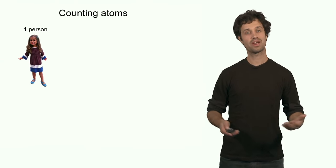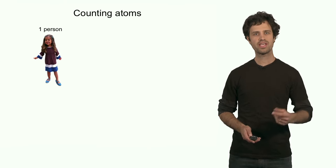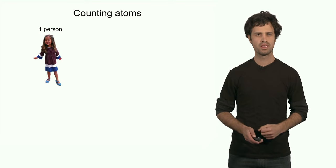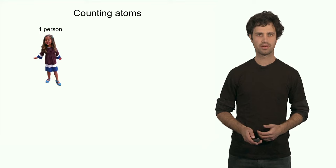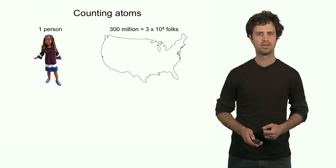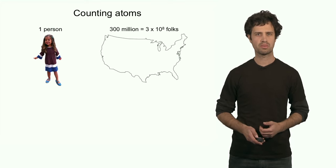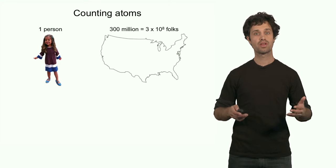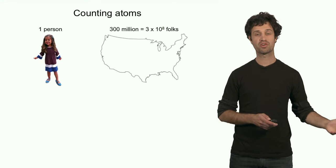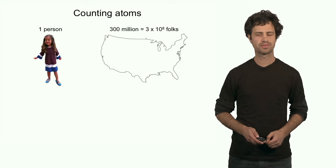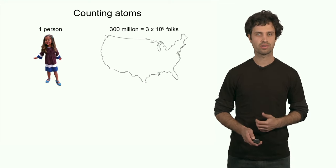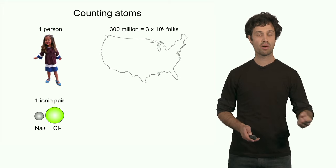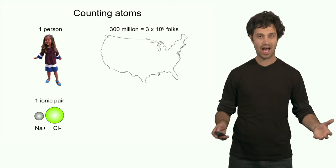Let's look at an example. People, like atoms, are countable objects. It's very easy to count just one person, but it becomes more difficult if you want to count the number of people in a country — let's say in the United States. There are about 300 million people in the United States. If you want to count the number of ions or molecules in a structure, the numbers are going to be a lot higher.